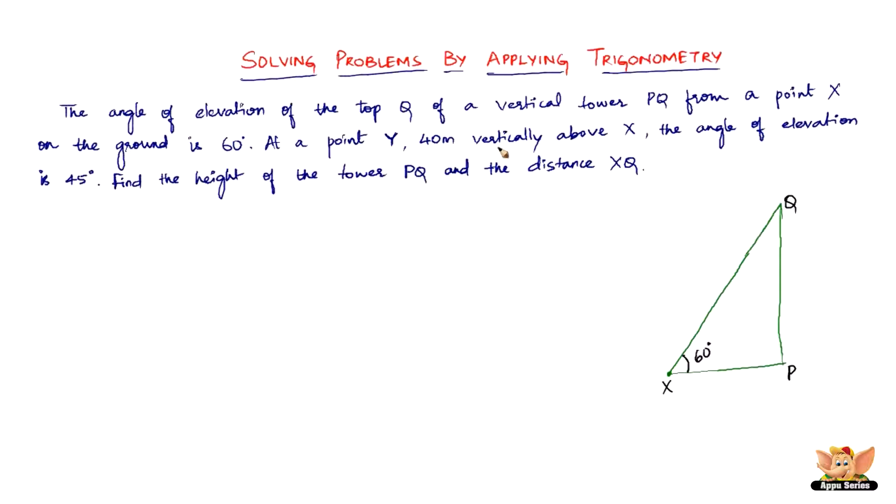Then it says at a point Y, 40 meters vertically above X. So we've got X here, now 40 meters vertically above X, somewhere here. Y is another point Y. The angle of elevation is 45 degrees from this point, so we need to draw the reference line for this. This is going to be 45. Remember this is just an illustration. If you want to get it right, please use the necessary geometrical instruments. So we've got 60 degrees here and 45 degrees here.